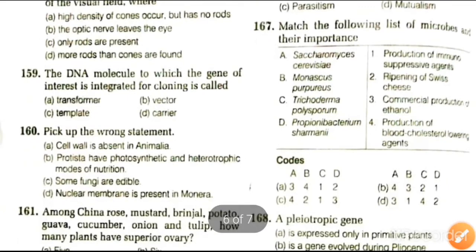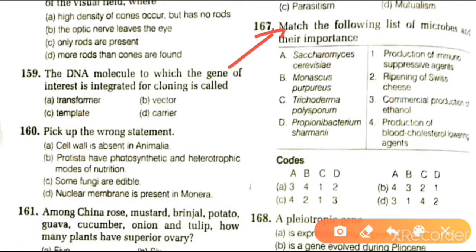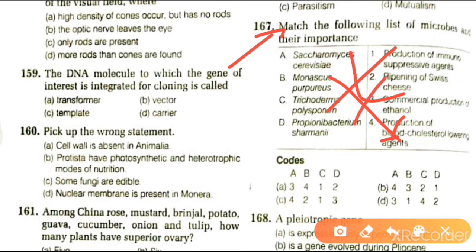Next question: match the following list of microbes and their importance. Saccharomyces is used for commercial production. Monascus purpureus is used for blood cholesterol lowering agent. Trichoderma polysporum is used for production of immunosuppressant cyclosporin. Propionibacterium shermanii helps in the ripening of Swiss cheese. The correct option is B: 3 to 2.